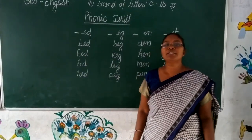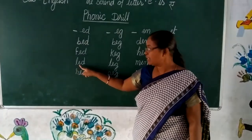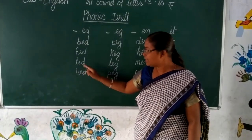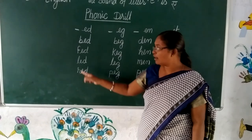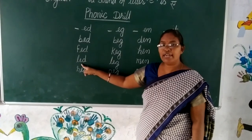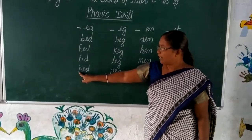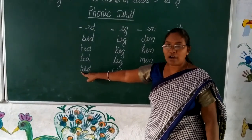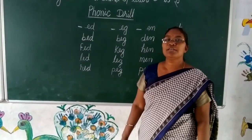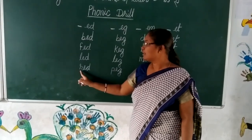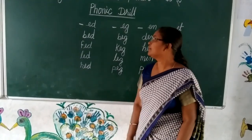Next we added letter L before E. The phonic sound is 'l' and 'len'. Next we added letter R before E. The phonic sound is 'r' and 'red'.